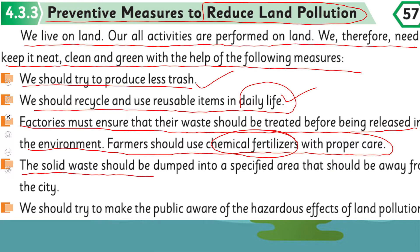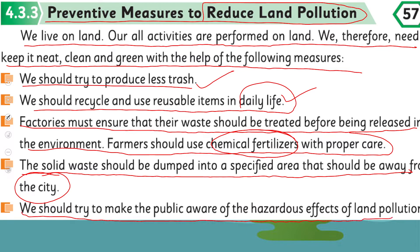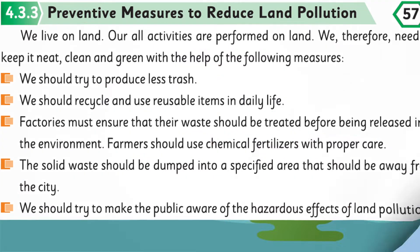Farmers should use chemical fertilizers with proper care aur kam istamal kare. The solid waste should be dumped into a specified area away from the city — usko aisi jaga pe dump karna chahiye jo ke abadi se door ho, har jagah bas dump karna nahi. We should try to make the public aware of the hazardous effects of land pollution taake wo land pollution ko kam se kam cause kare.